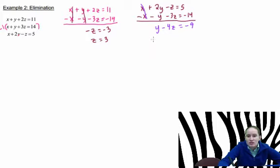So y minus 4 times 3 equals negative 9. So y minus 12 equals negative 9. Plus 12 on each side. And you get y equals 3.